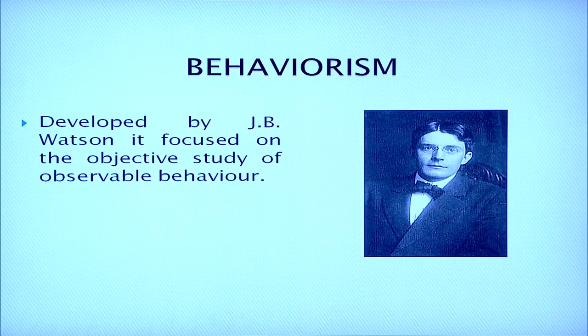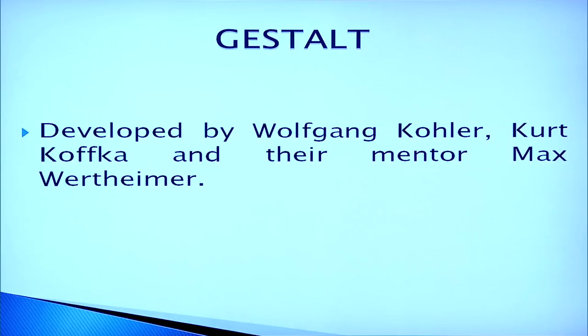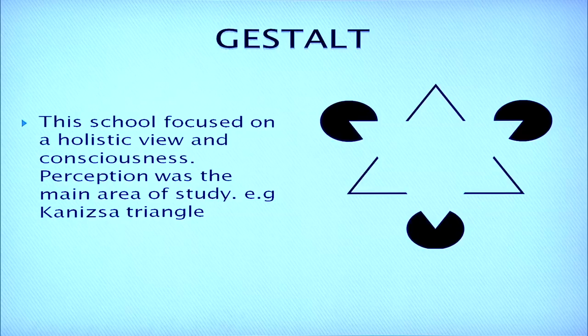The next school of thought is known as behaviorism. It was developed by J.B. Watson and focused on the objective study of observable behavior — whatever behavior can be seen with open eyes and how it can be interpreted to understand human behavior. The next school of thought is known as Gestalt. It was developed by Wolfgang Köhler, Kurt Koffka, and their mentor Max Wertheimer. The main aim of this school was to understand human behavior as a whole. This school focused on a holistic view and consciousness, and perception was the main area of study.